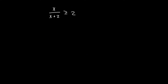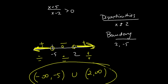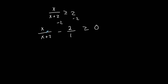Now look at this second rational inequality — it doesn't have zero on the right. So I have algebraic manipulation to do first because I always want zero on the right. I'm going to subtract two from both sides to get x over (x plus two) minus two is greater than or equal to zero. I now have two separate fractions, so I'll rewrite two as two over one and find a common denominator to combine them.